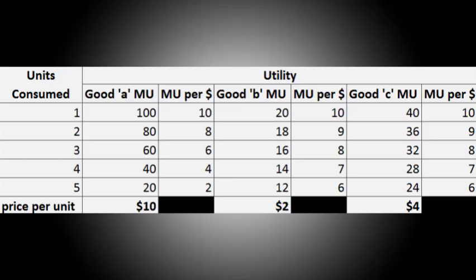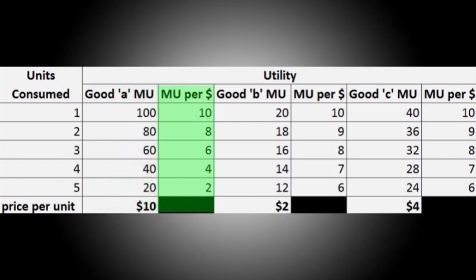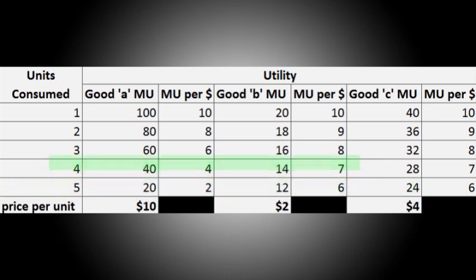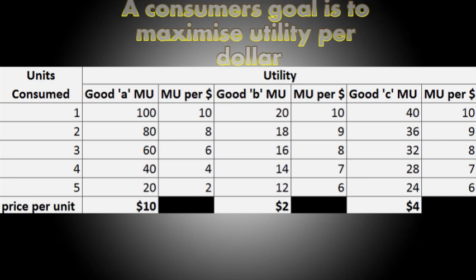We put this into a table. We have units consumed on the left and the marginal utility of a good to the right. Then the marginal utility per dollar for good A to the right of that, and then we do good B, C, D, etc. Price per unit goes on the bottom to show us the cost of each unit. Our objective is to consume the higher marginal utility per dollar goods first, then work our way down until all the allocated income is used.